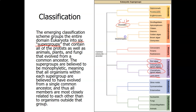The other subgroup for the Chromalveolata is called straminopiles, and that includes the diatoms, the golden algae, brown algae, and oomycetes. You do say 'oo' — it's Oomycetes. The diatoms are the ones that are so beautiful under the microscope. They have a two-part glass shell, different colors, different shapes — they can just be really beautiful.